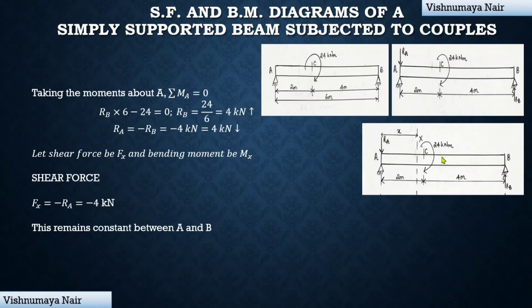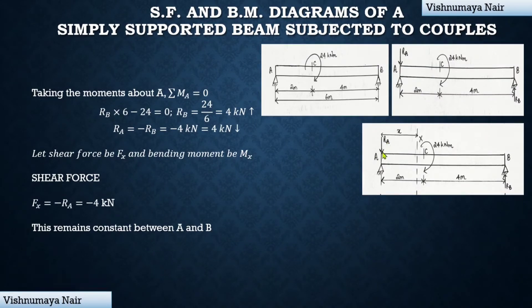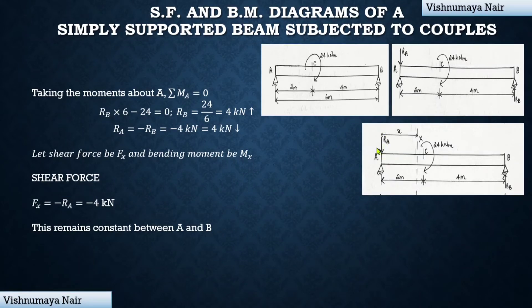To find shear force variation along the beam, we consider a section at a distance x meters from end A and look at the left portion. On the left portion, we only have reaction force Ra acting downward. Any force acting downward on the left portion is considered negative. Therefore, shear force at this section equals −Ra = −4 kN, and this remains constant between points A and B because there are no other point loads between these two points.